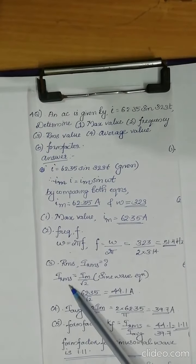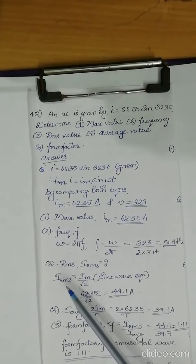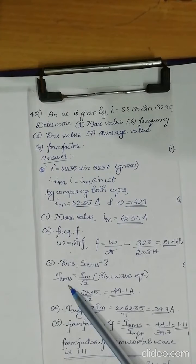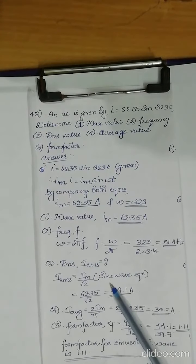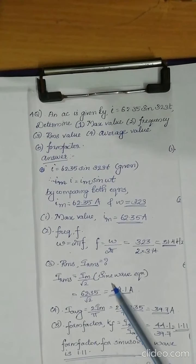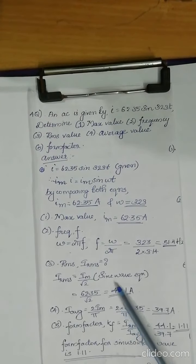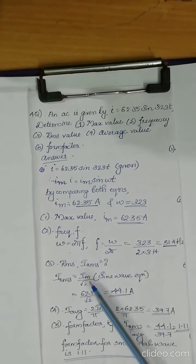Now we can find out the value of RMS current. We know that for a pure sine wave in the form of im sin omega t, irms is equal to im by root 2. That we have obtained from the derivation from RMS and average value of a purely sinusoidal pulse.